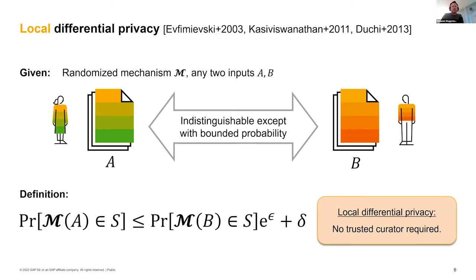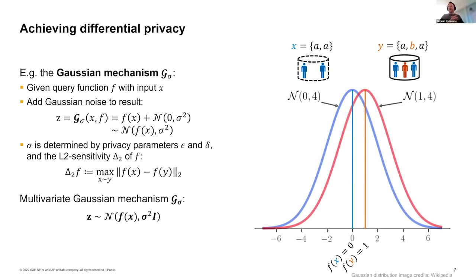Ideally, we would also like to switch to a different model of differential privacy called the local model, which we've also seen in previous talks in this session. It gets rid of this requirement that you need a trusted curator. The definition basically is the same as central differential privacy, except that you can take any two inputs that don't necessarily differ in a record and they don't even have to be data sets. In our case, they will be the individual's review texts. So this is the model that we are going to use in this work.